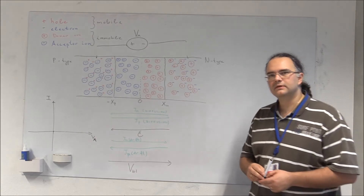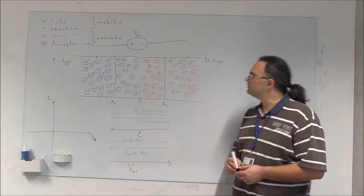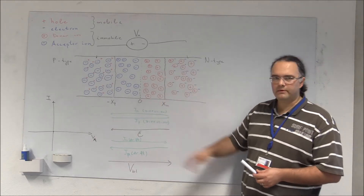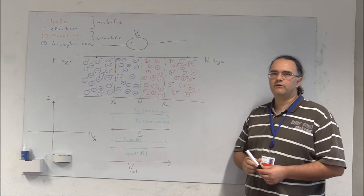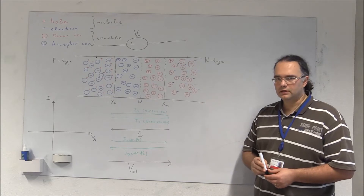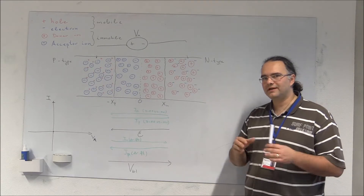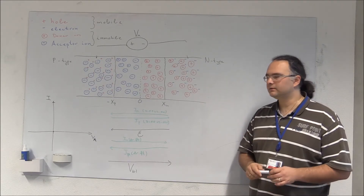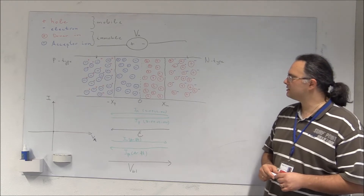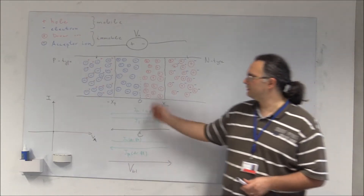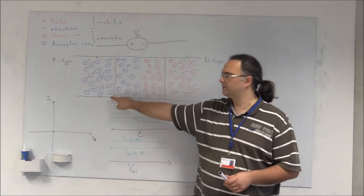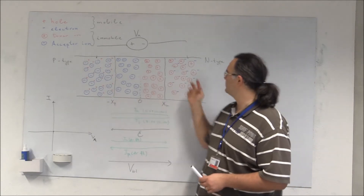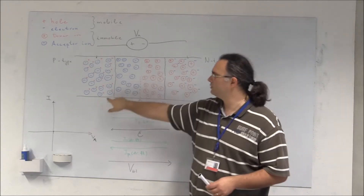In my previous YouTube videos I described the basic operation of the PN junction. Here I will derive analytically with equations the relationship between the injection of minority carriers, for example electrons from the N-type to the P-type.